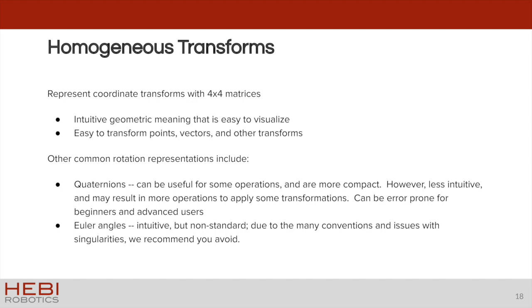There are other common representations that are also great for certain situations. One of the common representations is to use quaternions for the rotation matrices. These can really be useful for some operations and are more compact. They only require four numbers. However, they're less intuitive and may result in more operations actually to apply some of the transformations for points and vectors.